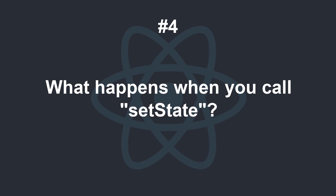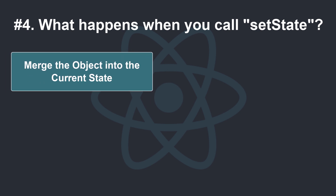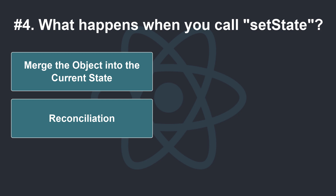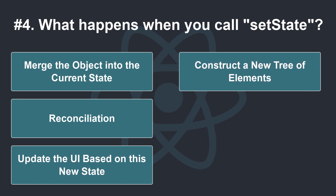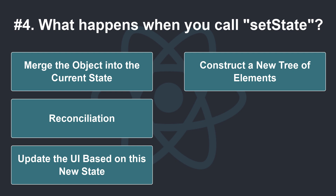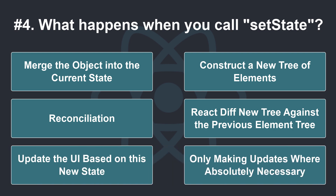What happens when you call setState? The first thing React will do when setState is called is merge the object you passed into setState into the current state of the component. This will kick off a process called reconciliation. The end goal of reconciliation is to, in the most efficient way possible, update the UI based on this new state. To do this, React will construct a new tree of React elements, which you can think of as an object representation of your UI. Once it has this tree, in order to figure out how the UI should change in response to the new state, React will diff this new tree against the previous element tree. By doing this, React will then know the exact changes that occurred, and by knowing exactly what changes occurred, it is able to minimize its footprint on the UI by only making updates where absolutely necessary.